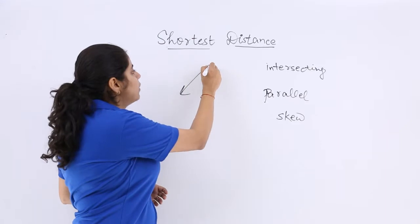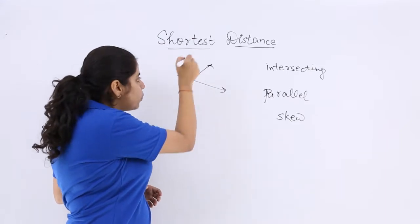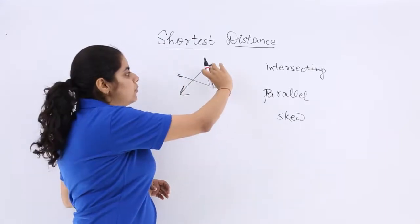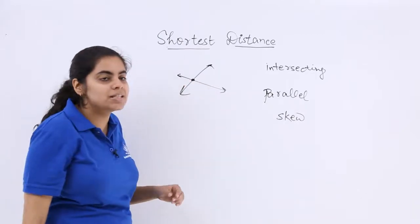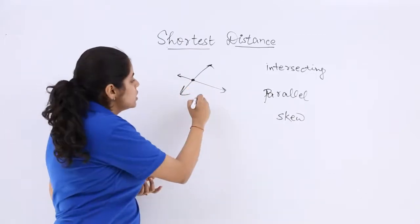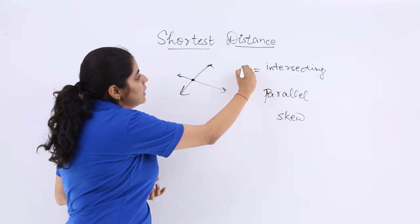So the intersecting lines anyways are going to have a common intersection point. So what is the shortest distance between them? Here the distance is more and here only this will be the minimum distance and this is simply a point. So the shortest distance between the intersecting lines is zero.